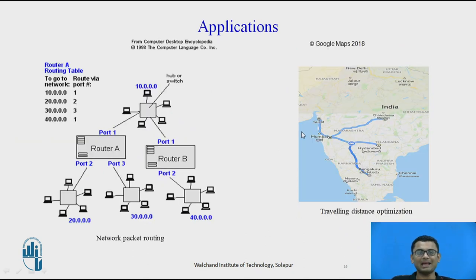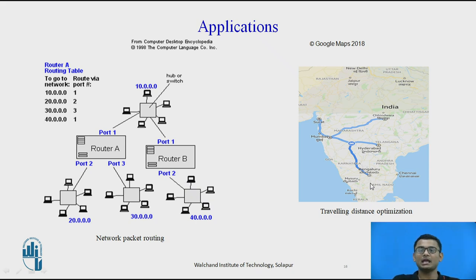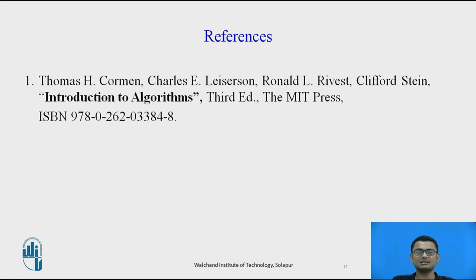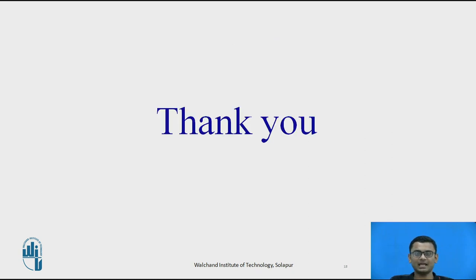Dijkstra's algorithm has applications in network routing, where we find the shortest path for packets to flow. It is also used in GPS applications where a shortest path from source to destination is required. The reference for this module is the CLRS textbook, Introduction to Algorithms, Third Edition. Thank you very much.